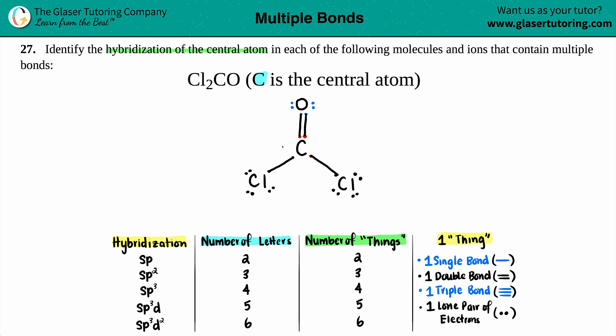Now they just wanted to know what the hybridization for the center atom is. So I'm only looking at what carbon has got going on. And let's see. Carbon has a single bond. So that's one thing. It's got another single bond. That's two things. And it has a double bond. That's one whole thing. So you got three things going on here.